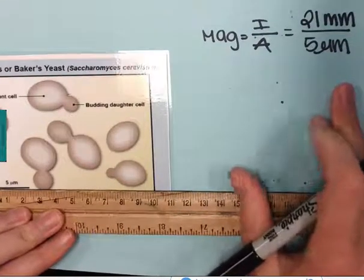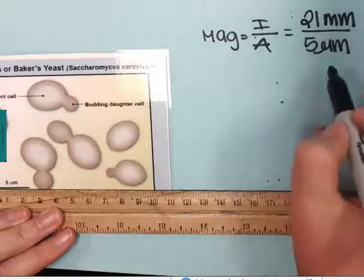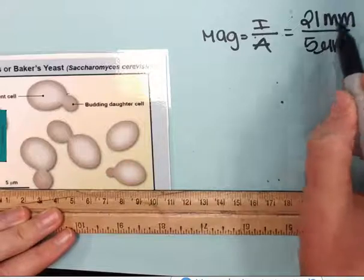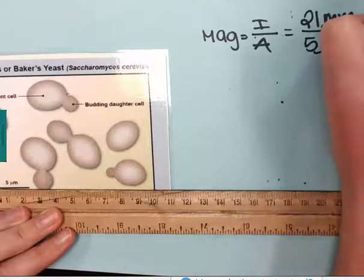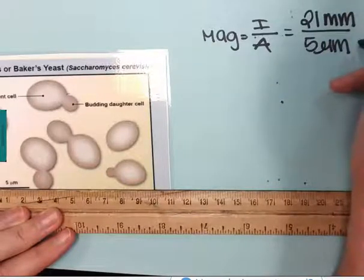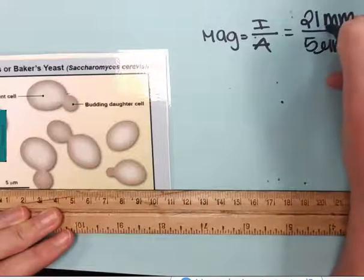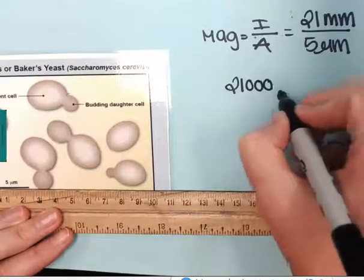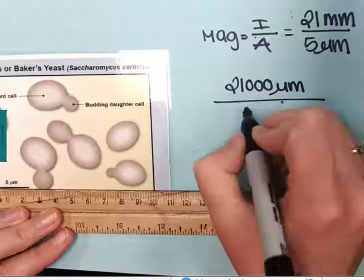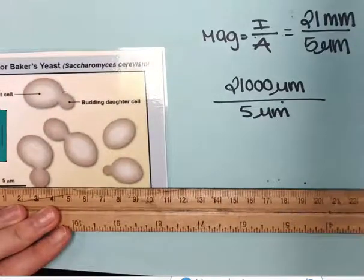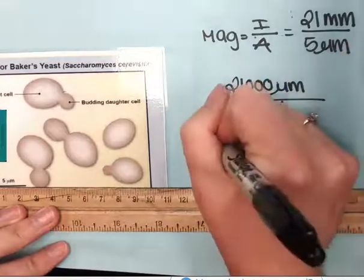Next step is to convert so that these are the same unit. Last time I went to millimeters, this time I'll go to micrometers. In order to convert the millimeters to micrometers, there's a thousand micrometers in a millimeter, so I'm going to multiply that by a thousand. That would be 21,000 micrometers divided by five micrometers. So 21,000 divided by five, and I get my magnification.